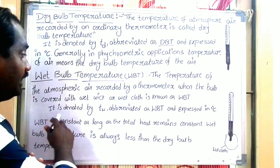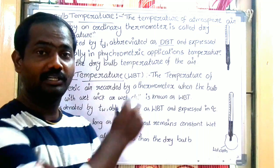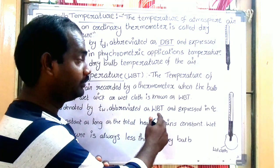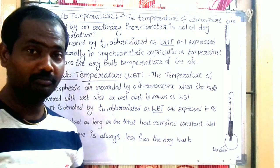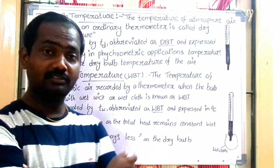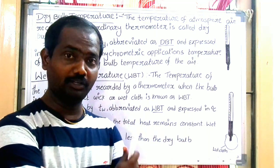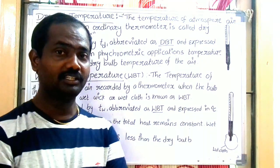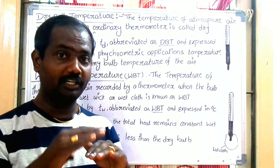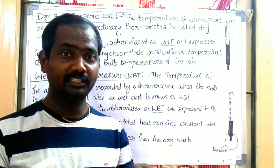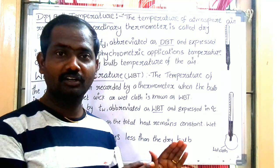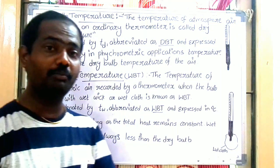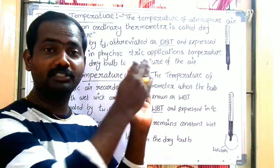Wet Bulb Temperature is denoted by Tw. Dry Bulb Temperature is Td, and Wet Bulb Temperature is Tw, abbreviated as WBT. Wet bulb temperature is always less than the dry bulb temperature.